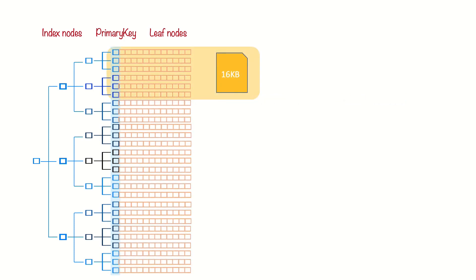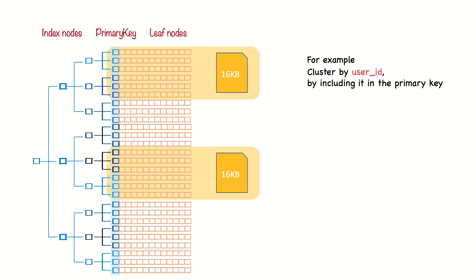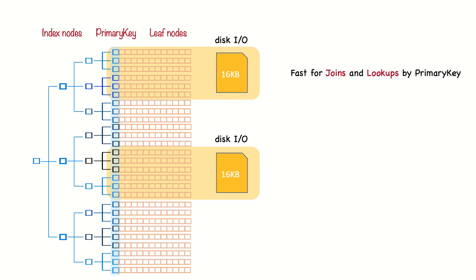MySQL and most databases store data in fixed-size pages. Because we keep related data close together, we can fetch more data by reading fewer pages. For example, when implementing a mailbox, you can cluster by user ID so you can retrieve all messages of a single user by fetching only a few pages from disk. If you didn't use clustering, each message might require its own disk I/O. Keeping data closely together also makes data access fast for joins and for lookups when using the primary key.